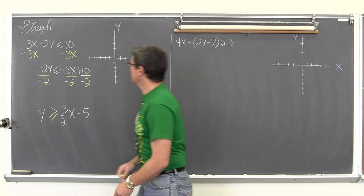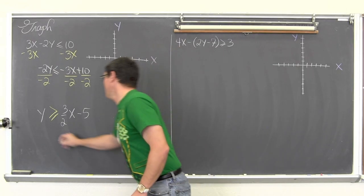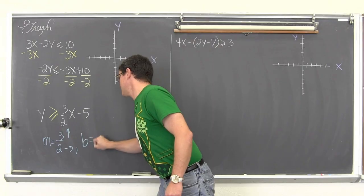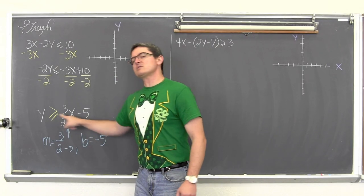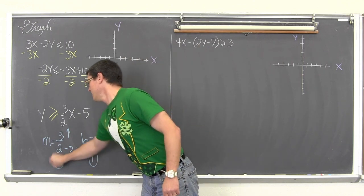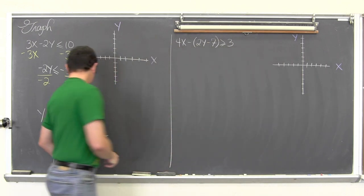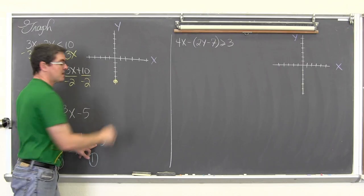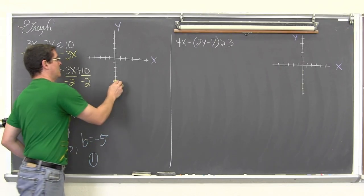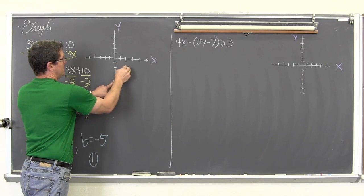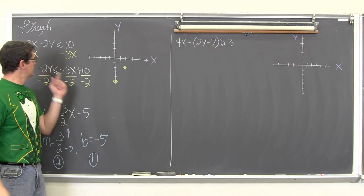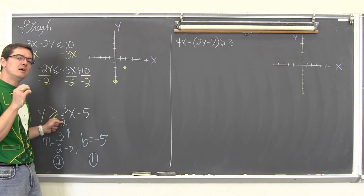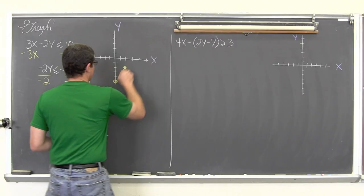We have a slope of 3 over 2, so we go up 3 and over 2, and a y-intercept of negative 5. When you put equations in slope-intercept form, do the y-intercept first, then the slope. So place a dot at negative 5 on the y-axis, then go up 3 and over 2 to get another point. Is this line going to be solid or dotted? There is an equal sign, so the line is solid, meaning the linear function itself is part of the solution to this inequality.